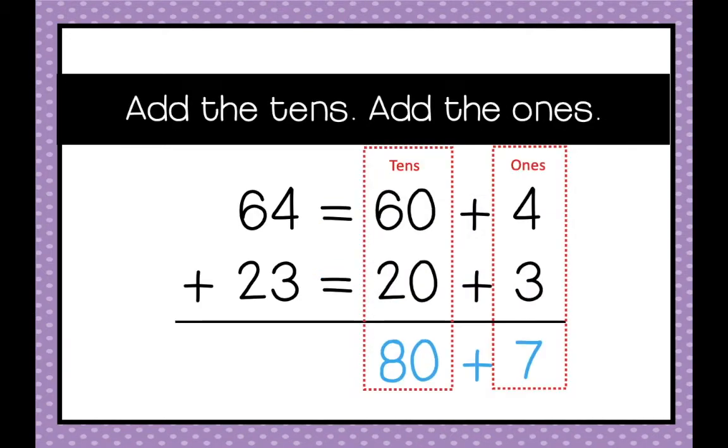Now we're going to add the tens. Here we've got the tens right here. 60 plus 20 equals 80. Then we're going to add the ones. 4 plus 3 equals 7.